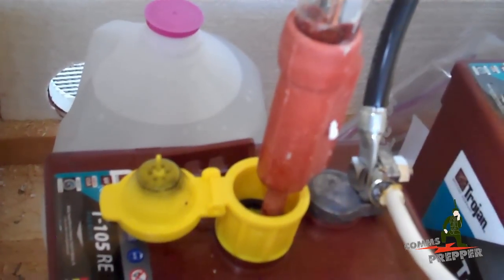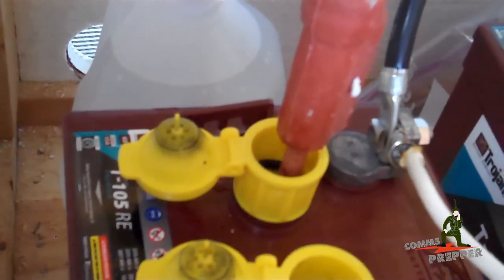As of this check, none of the cells need any extra water, so the water miser vent cap seems to be working and my battery system appears to be healthy. Again, I try to do this at least every three weeks.